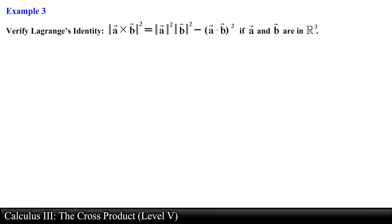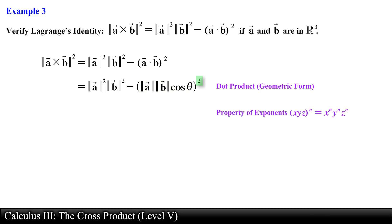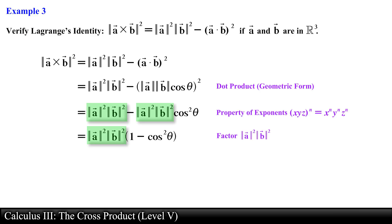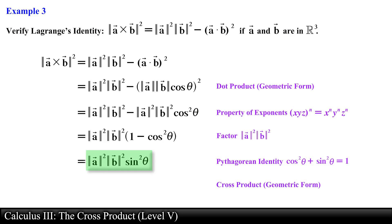Verify Lagrange's identity if vector a and vector b are in R³. We let theta be the angle between vector a and vector b. The dot product on the right side of the identity can be written as the magnitude of vector a times the magnitude of vector b times cosine theta — the geometric definition of the dot product. Using properties of exponents, we factor, then apply the Pythagorean identity to replace 1 minus cosine²(theta) with sine²(theta). The resulting expression is the magnitude of the cross product between vector a and vector b, squared. This ends the proof.